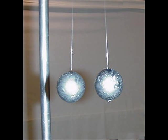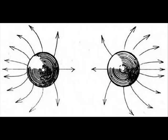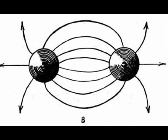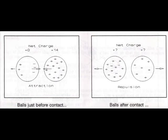If two small balls suspended pendulum-wise are given electric charges of the same sign, they will be pushed some distance apart by mutually repellent forces exerted by the two similarly charged balls. On the other hand, two oppositely charged balls will attract each other, and when they come into contact their charges will neutralize each other.